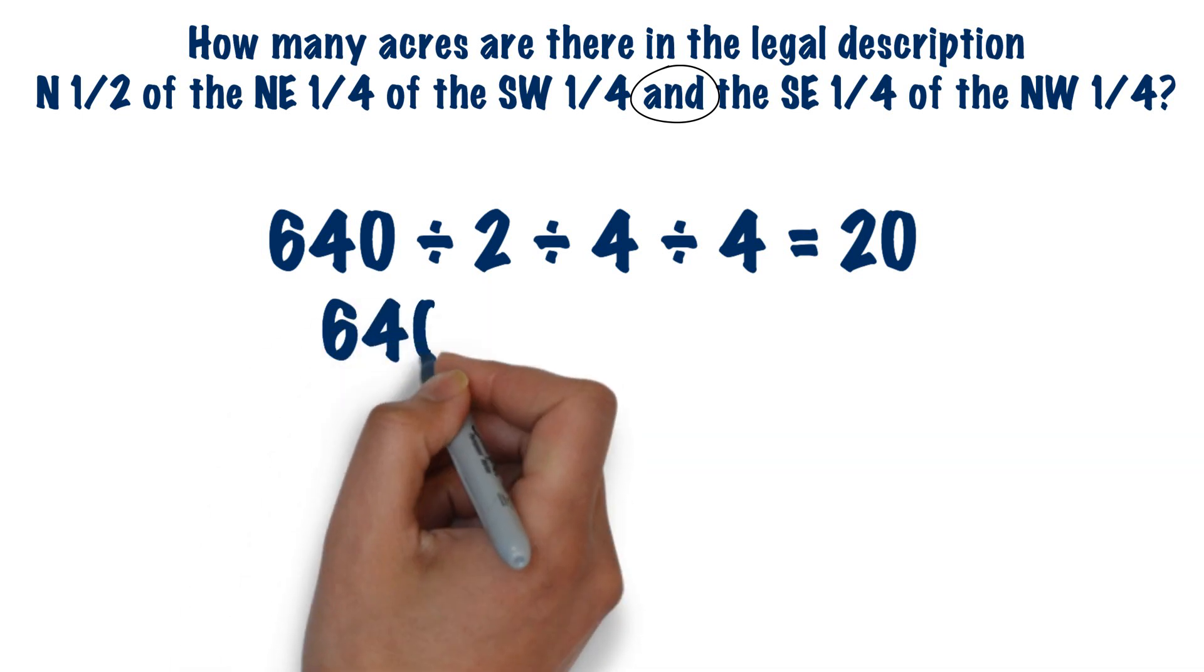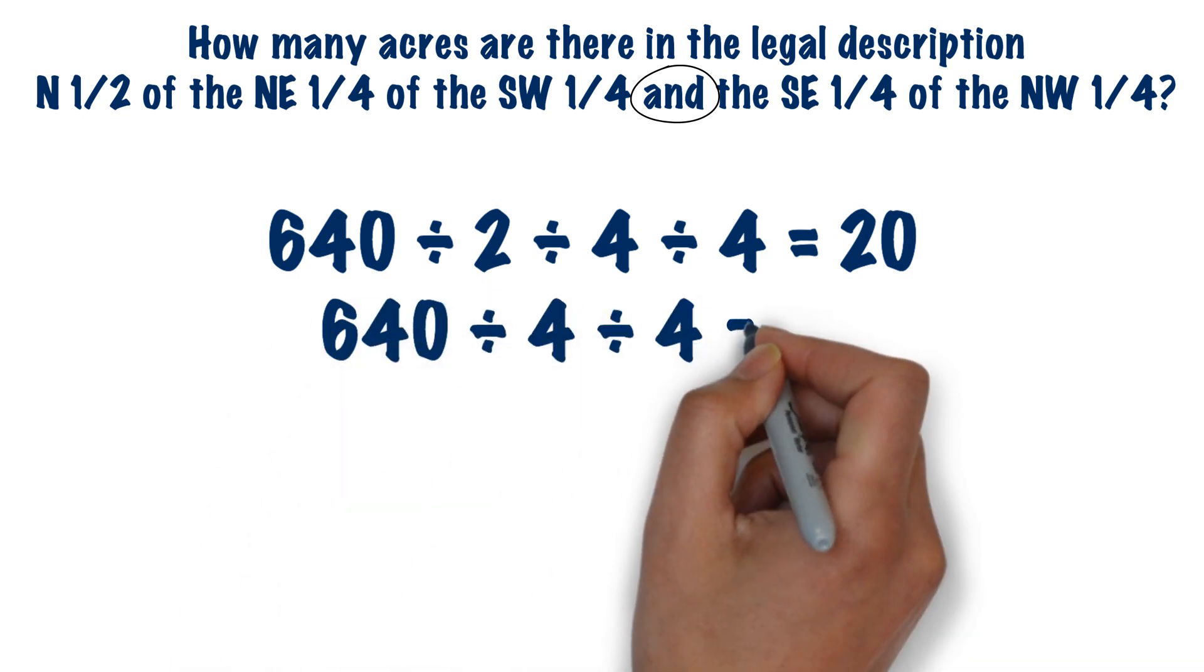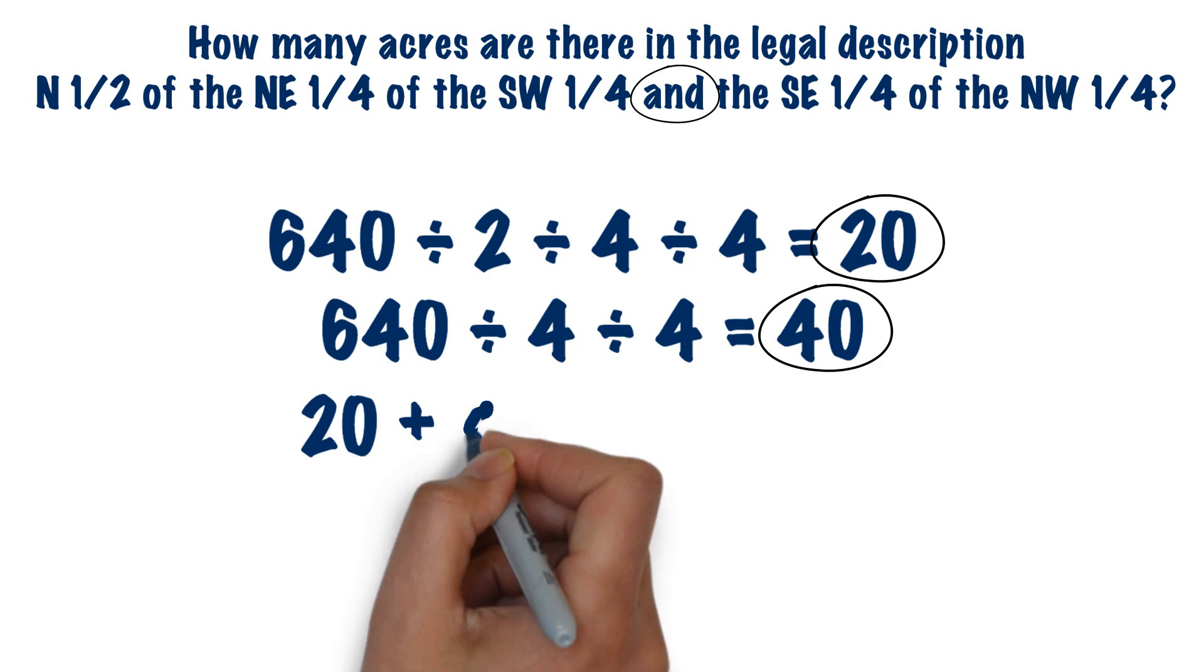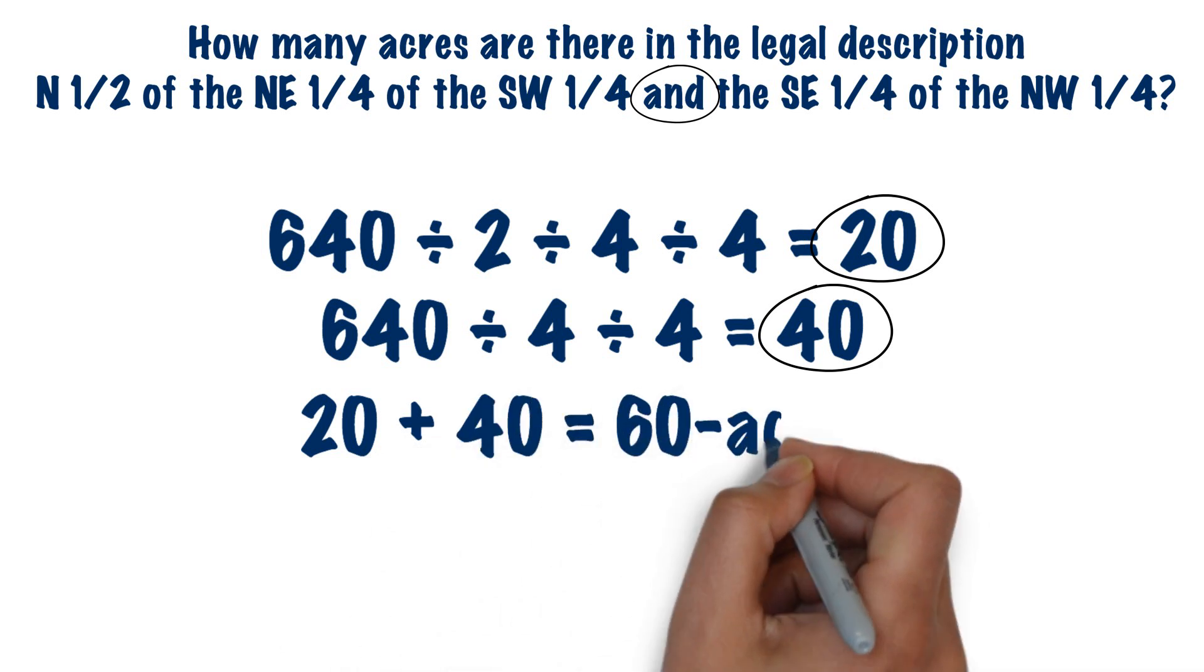Then to the right of that, we add 640, we divide by 4, divide by 4 to get 40. When we take the 20 from the first calculation and the 40 from the second calculation, we add them together to get our final answer of 60 acres.